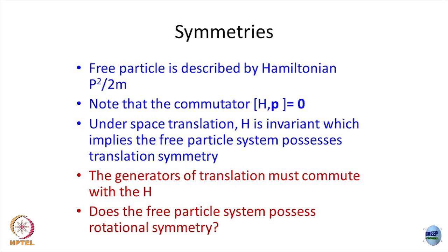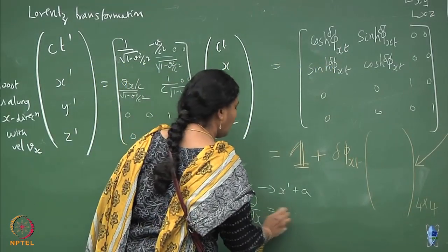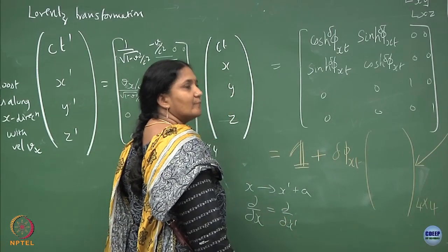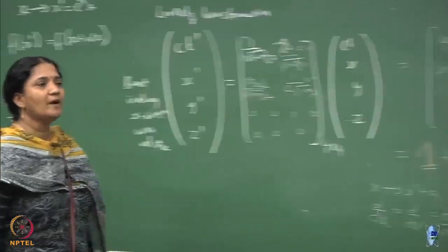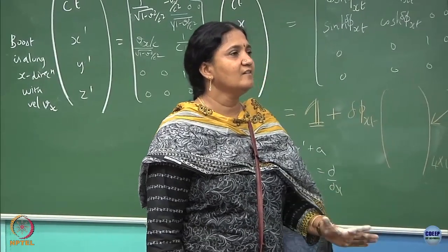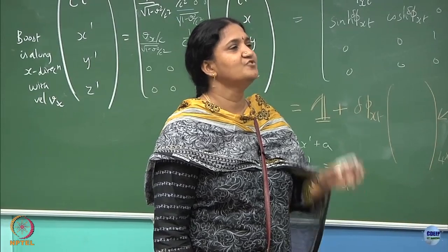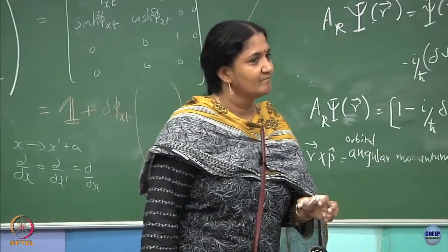For a free particle, you can see that if you do a translation x to x prime, p squared over 2m does not change. If you take x to x prime, del by del x is going to remain as del by del x prime — it is going to be the same. So the free particle Hamiltonian respects translational symmetry, and if it respects translational symmetry, the Hamiltonian should commute with the generator of that symmetry, which is the linear momentum.